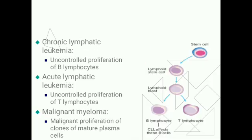In chronic lymphatic leukemia there is uncontrolled proliferation of B lymphocytes, whereas in acute lymphatic leukemia there is uncontrolled production of T lymphocytes. Another disease is malignant myeloma, which involves malignant proliferation of clones of mature plasma cells.